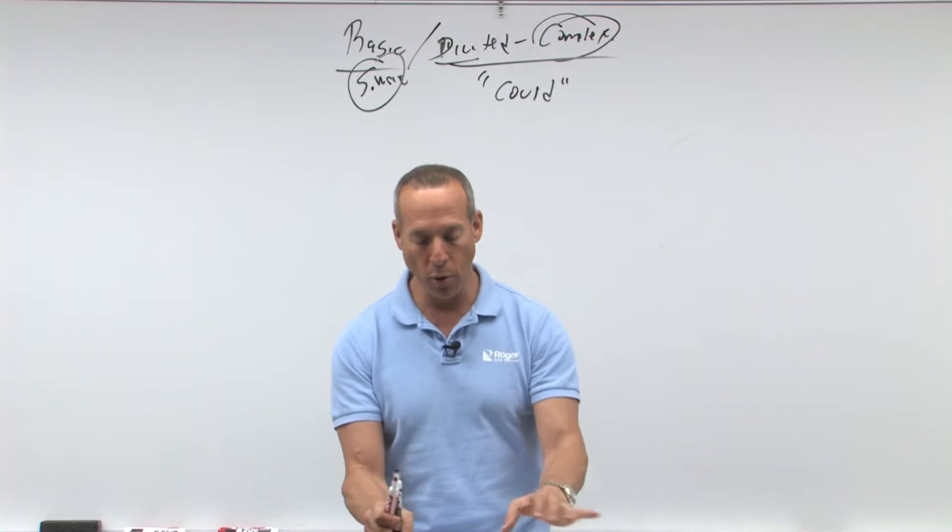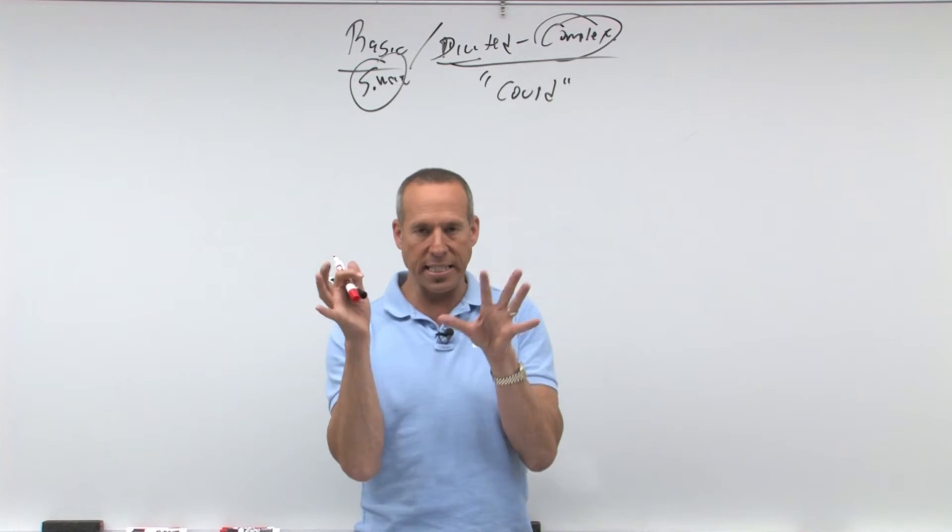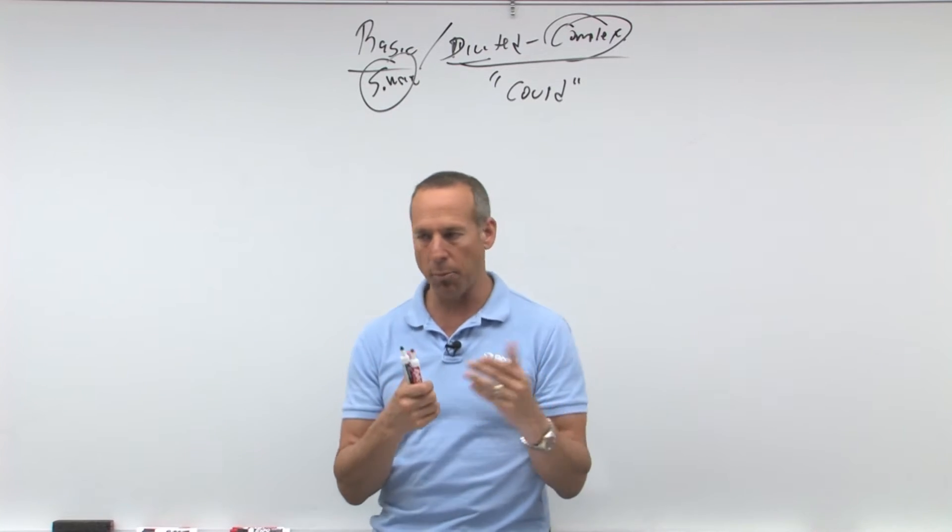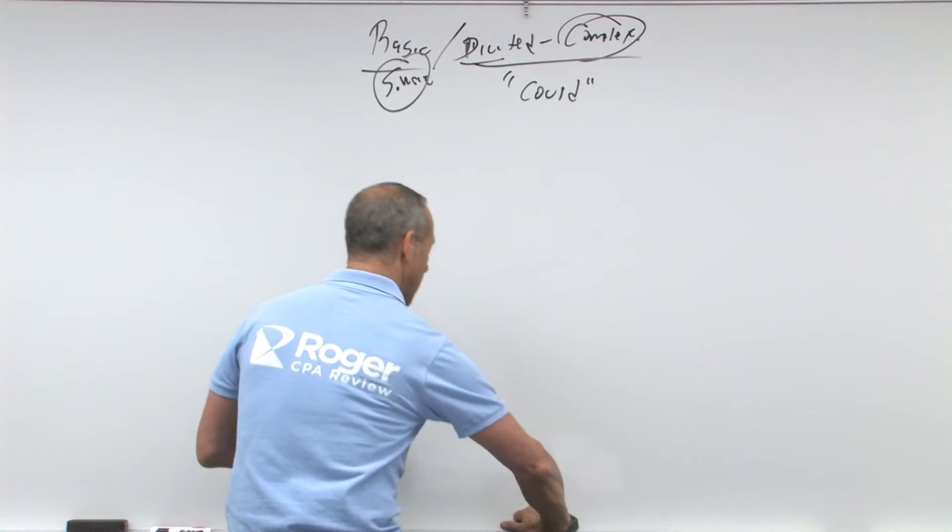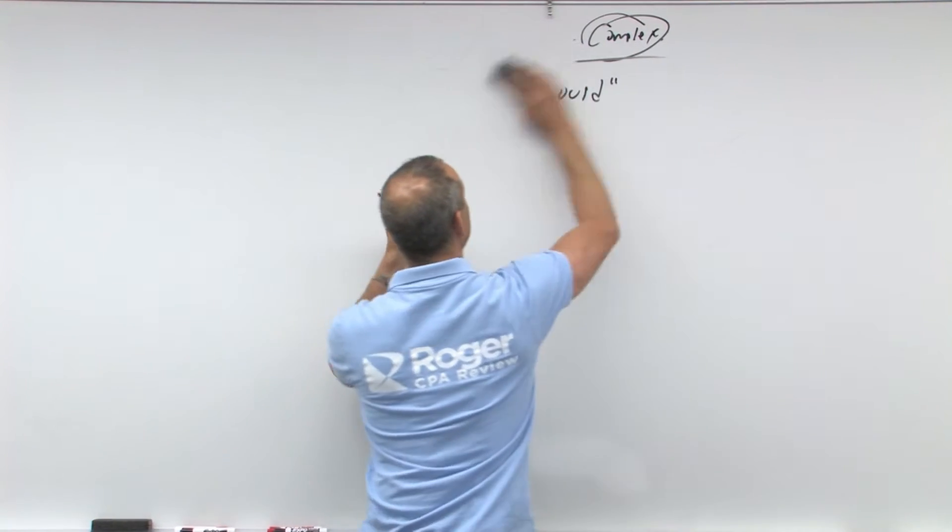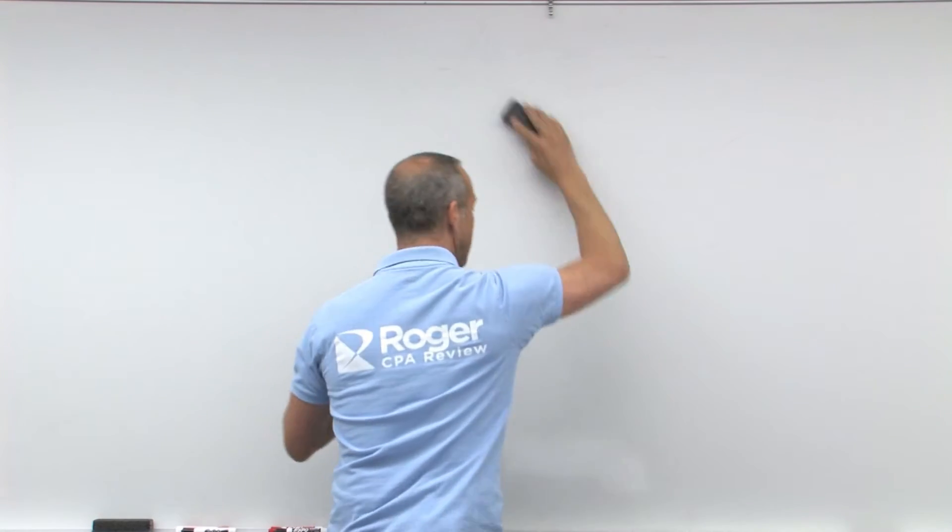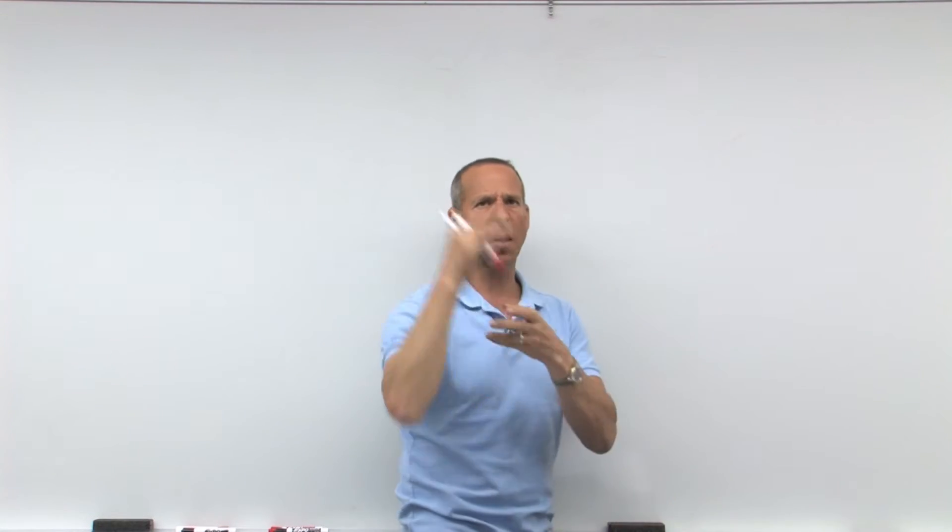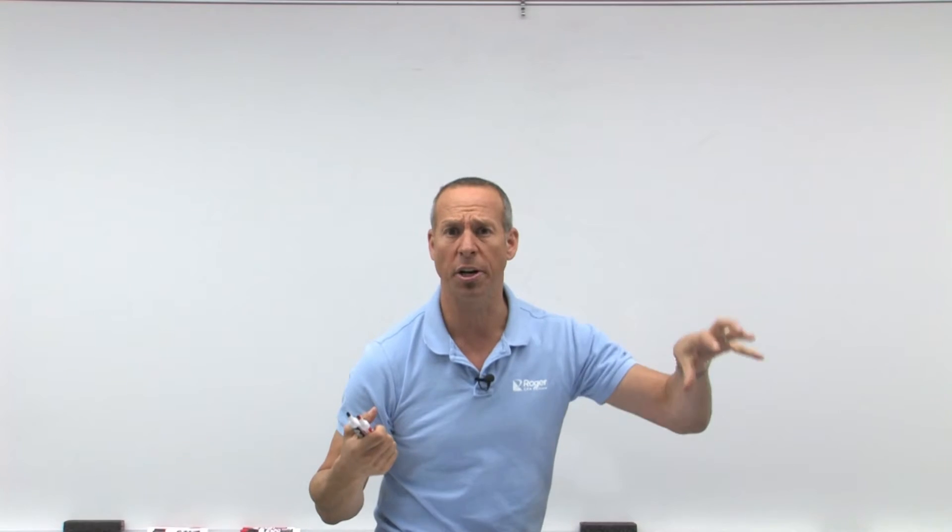Now, as we go through this, what we need to do is set it up so that it's understandable. So I'm going to set up here the two types called basic and diluted, and as you calculate it, it's something divided by something to get your earnings per share.